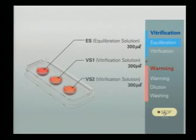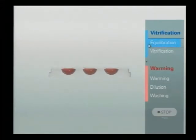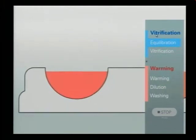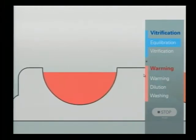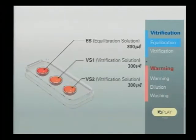So we first fill the first well with incubation solution, like 300 microliters of the incubation solution in the first well, and also 300 microliters of the incubation solution in well two and three. This is the same solution in the vitrification plate.